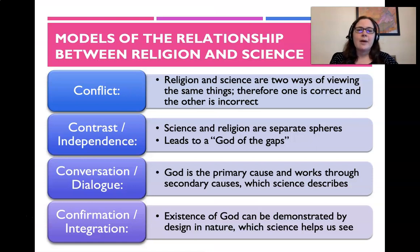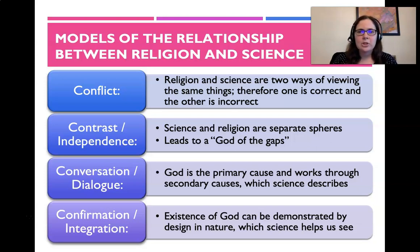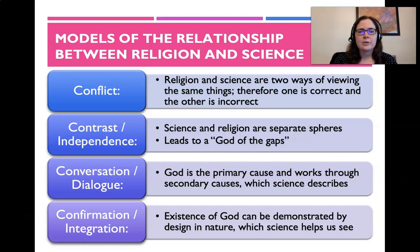For the models of the relationship between religion and science, many people believe that there's only one acceptable model, and that is conflict — that basically religion and science are two ways of talking about the exact same thing, so therefore one is correct and the other is incorrect. But that is only one point of view. There's also the model of contrast or independence, that science and religion are totally separate and independent of each other. This leads to a 'god of the gaps' — basically anything that science can't explain must be God, a miracle.